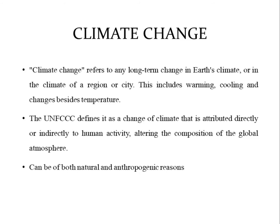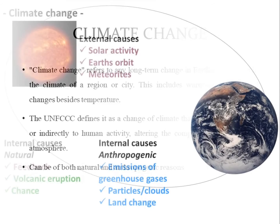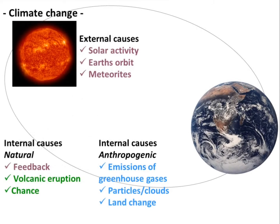We are talking about natural causes and endogenic causes. What are the causes? External causes — that is solar activity, earth orbit, meteorites. Then internal causes: endogenic causes are natural, that is emission — different types of emissions we know. Then land change, internal causes — natural will be volcanic eruption, feedback chance, etc.